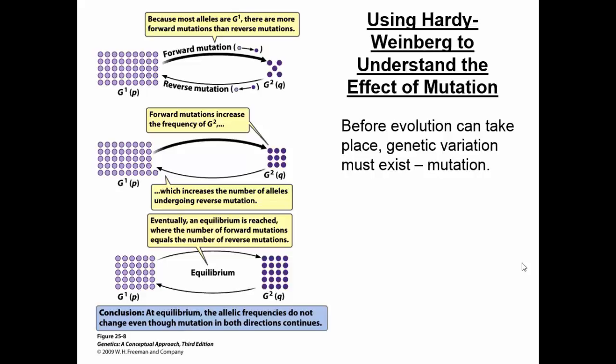Let's look at the effect of mutation on Hardy-Weinberg. We consider a population with allele P on the left and allele Q on the right. Sometimes P might turn into Q — that's the forward mutation rate, described by the Greek letter mu. The change in Q equals mu times P. The higher the mu, the faster P turns into Q, so Q increases.